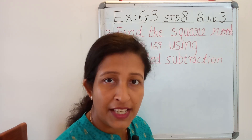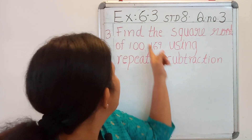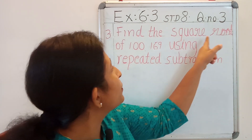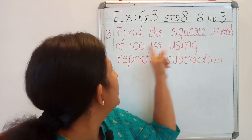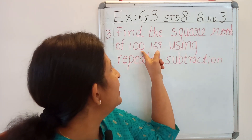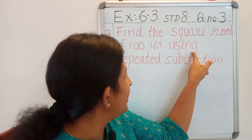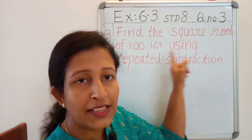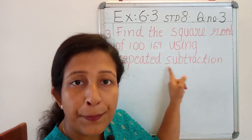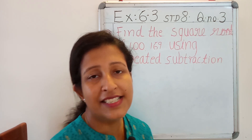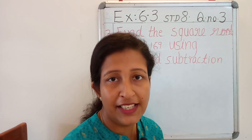Question number 3 says: find the square root of 100 and 169 using the method of repeated subtraction.